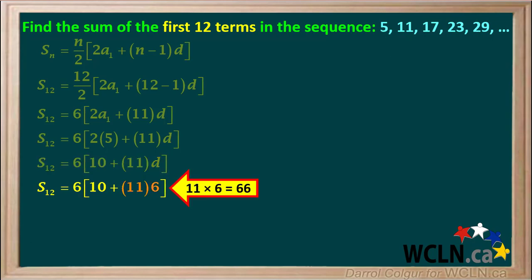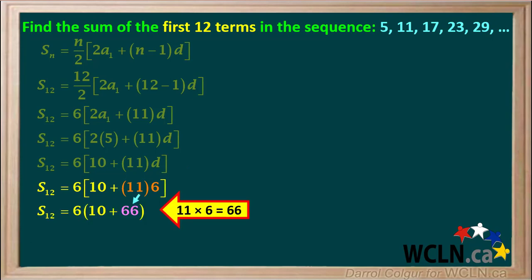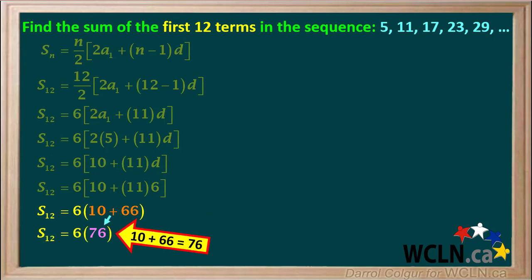11 times 6 is equal to 66. So we'll substitute 66 for 11 times 6. Now we have 10 plus 66 in the brackets, and 10 plus 66 is equal to 76. So we can substitute 76 for 10 plus 66. 6 times 76 is equal to 456. So we'll substitute 456 for 6 times 76.